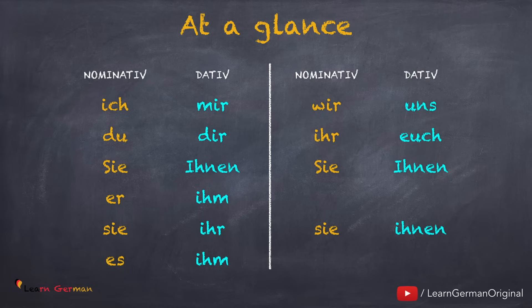A few tips to remember: the Dativ Personalpronomen for er and es are the same — both are ihm. The personal pronoun in Dativ for Sie (formal) is always Ihnen with a capital I, but the third person plural sie has the Dativ Personalpronomen as ihnen with a small i.